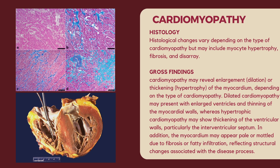For the gross findings, examination of the heart affected by cardiomyopathy may reveal enlargement, dilation, or thickening (hypertrophy) of the myocardium, depending on the type. Dilated cardiomyopathy may present with enlarged ventricles and thinning of the myocardial walls, while hypertrophic cardiomyopathy may show thickening of the ventricular walls, particularly the interventricular septum. Additionally, the myocardium may appear pale or mottled due to fibrosis or fatty infiltration, reflecting structural changes associated with the disease process.